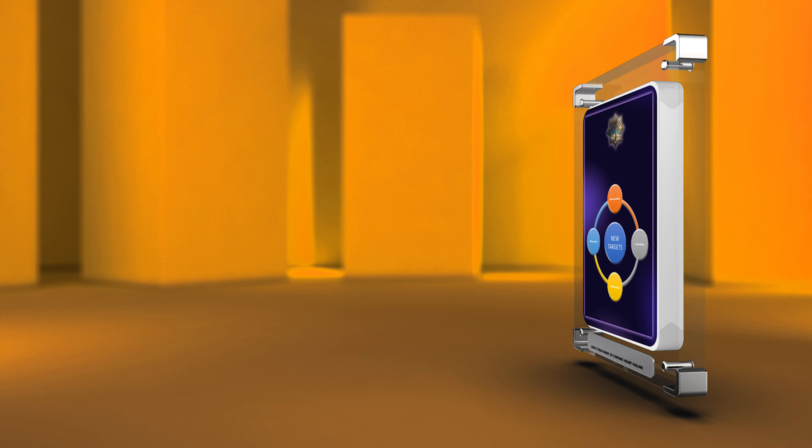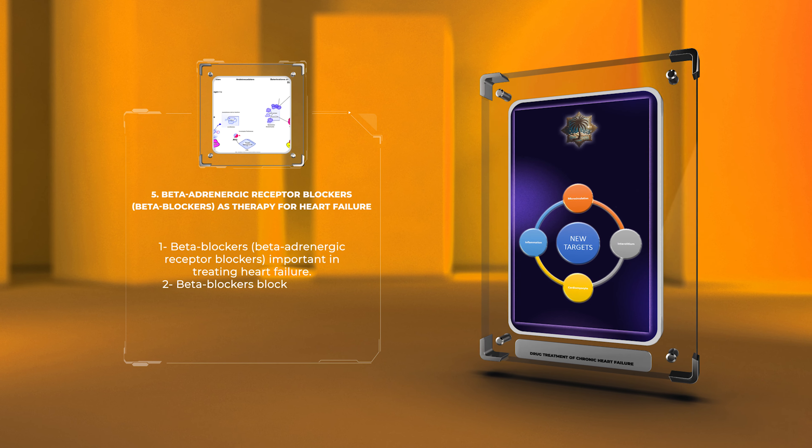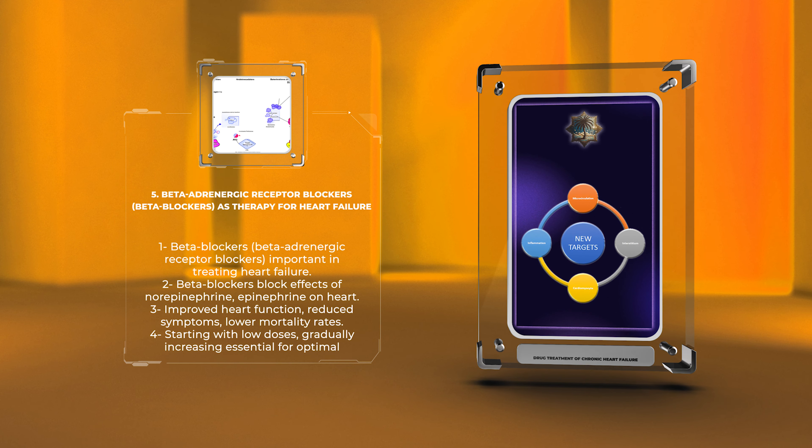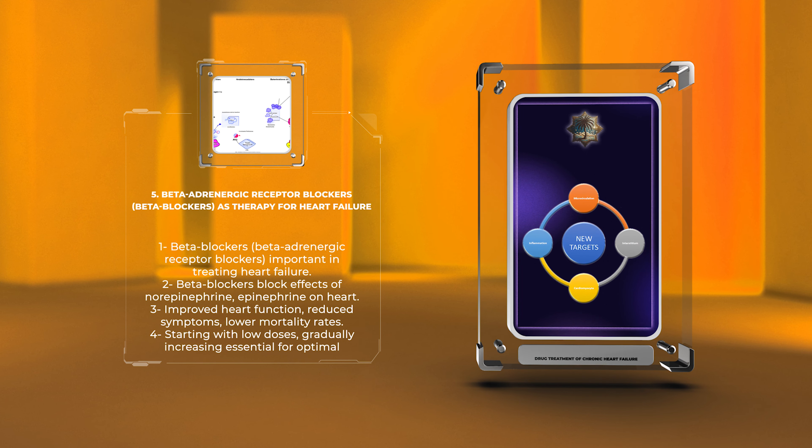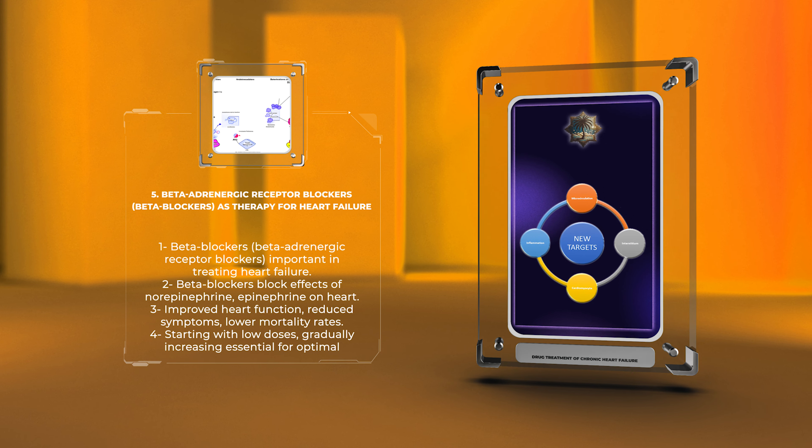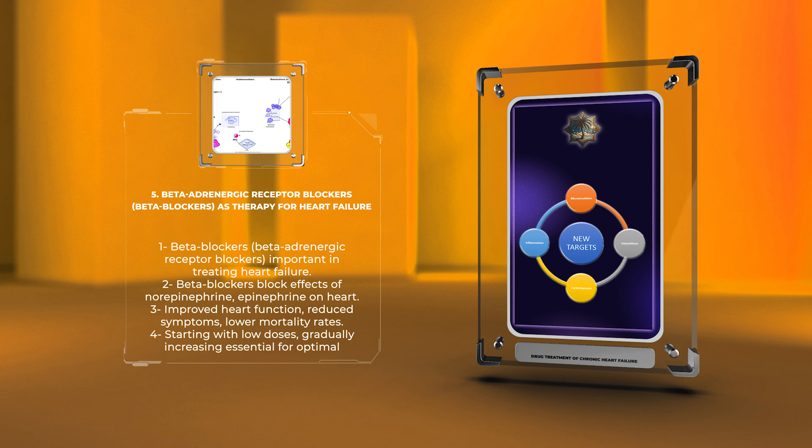Beta blockers, also known as beta-adrenergic receptor blockers, are important in treating heart failure. They block the effects of hormones like norepinephrine and epinephrine on the heart, leading to improved heart function, reduced symptoms, and lower mortality rates. Starting with low doses and gradually increasing is essential for optimal results.